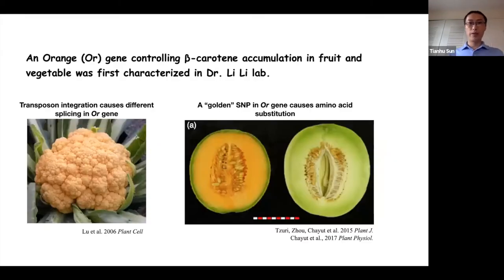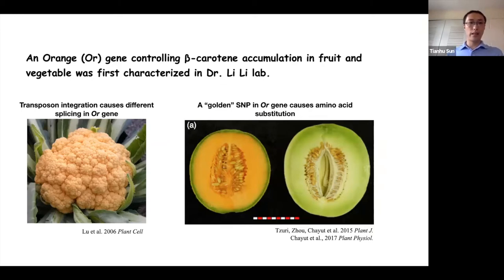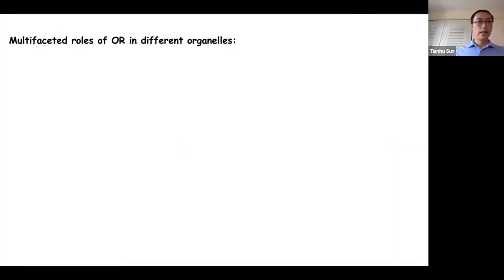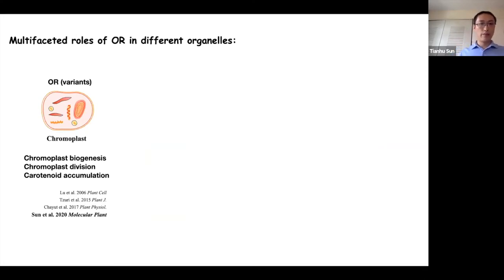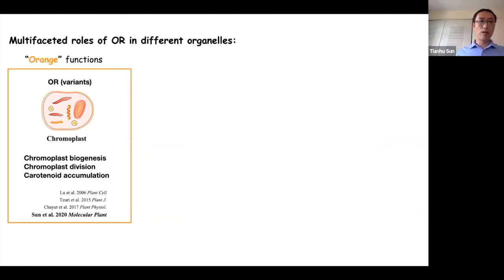The orange gene controlling beta-carotene and carotenoid accumulation was first characterized in Dr. Lili's lab. In cauliflower, a transposal insertion caused different splicing in the orange gene. After that, a golden SNP in the OR gene was also identified in melon, which caused amino acid substitution of orange protein and carotenoid accumulation in melon. We then identified the functions of OR variants in chromoplast formation, carotenoid accumulation, and recently chromoplast division — these are the orange functions of OR variants.